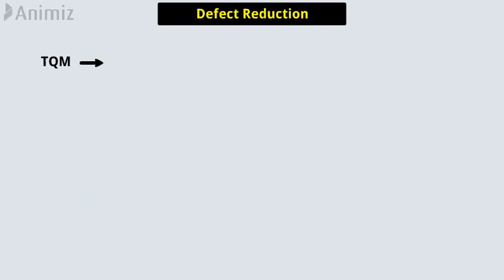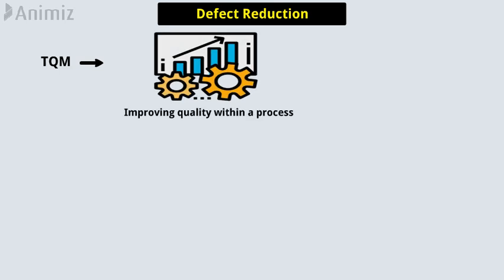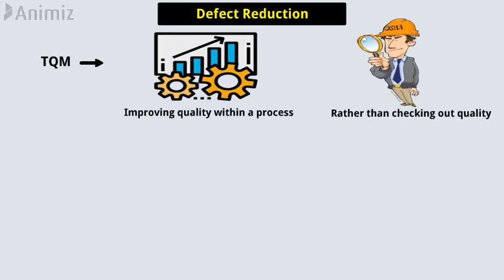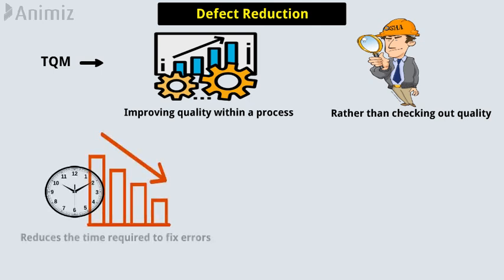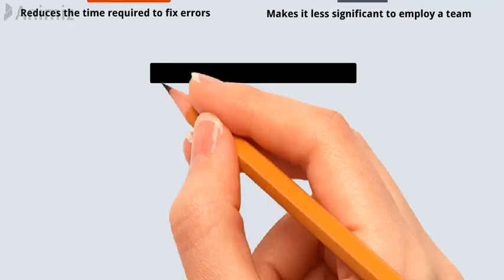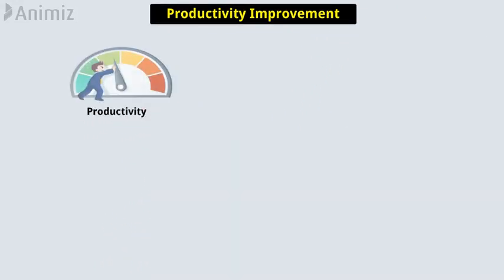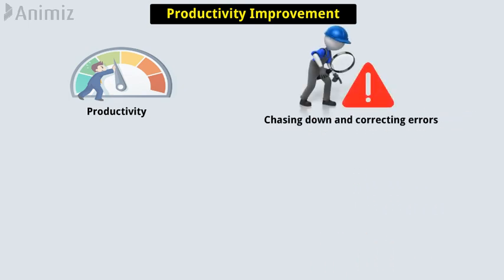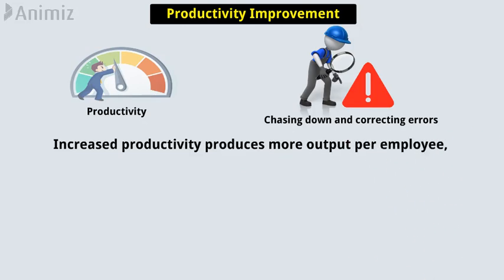The advantages of TQM include: Defect Reduction — total quality management has a strong influence in improving quality within a process, rather than checking quality into a process. This not only reduces the time required to fix errors, but makes it less necessary to employ a large quality assurance team. Productivity Improvement — productivity rises significantly since employees spend much less time chasing down and correcting errors, and increased productivity produces more output per employee, which often results in increased profits.